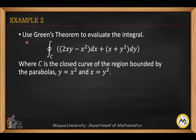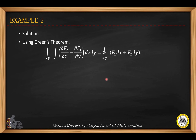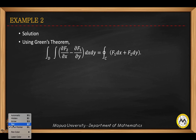So we use Green's theorem to evaluate this integral. C is a closed curve of the region bounded by the parabolas y equals x squared and x equals y squared.